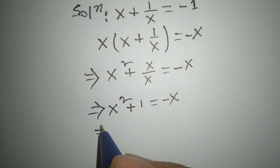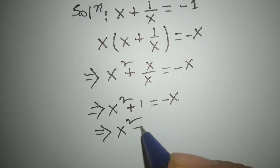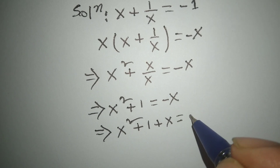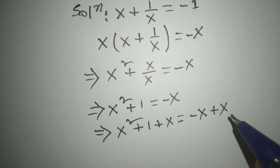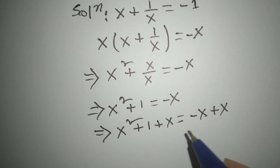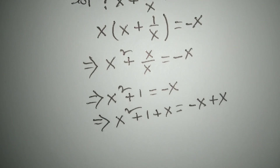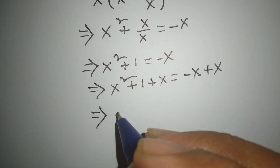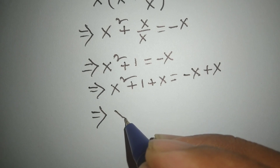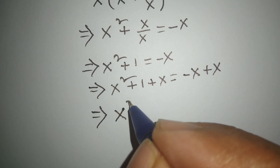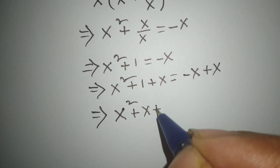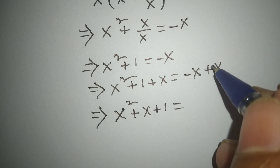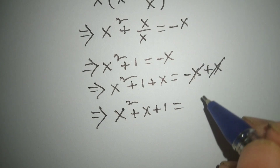Or x squared plus 1 plus x equals minus x plus x. We have added x to both sides. Rearranging, we can write x squared plus x plus 1 equals 0, as the plus x and minus x cancel each other, leaving 0.